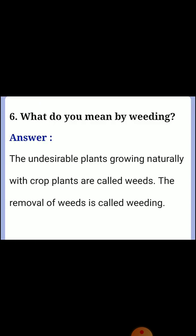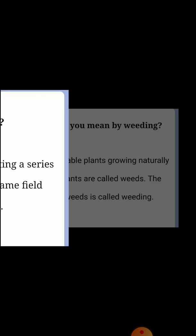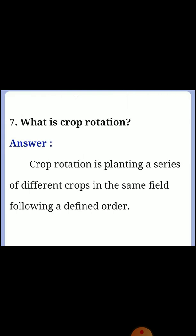Sixth question: What do you mean by weeding? Answer: Undisturbed plants growing naturally with crop plants are called weeds. The removal of weeds is called weeding. Seventh question: What is crop rotation? Answer: Crop rotation is planting a series of different crops in the same field following a defined order.